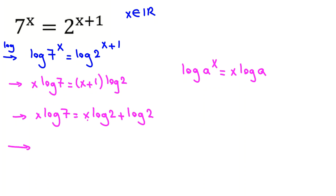So we subtract x log 2 from both sides because we want to collect x terms on the left. We have x log 7 minus x log 2. Now we don't have x on the right-hand side because they cancel. It equals log 2.